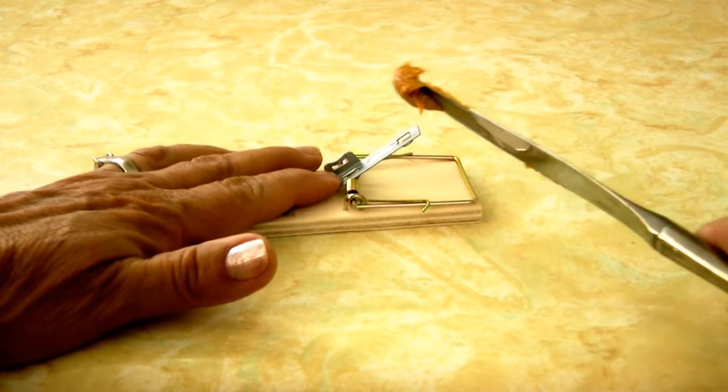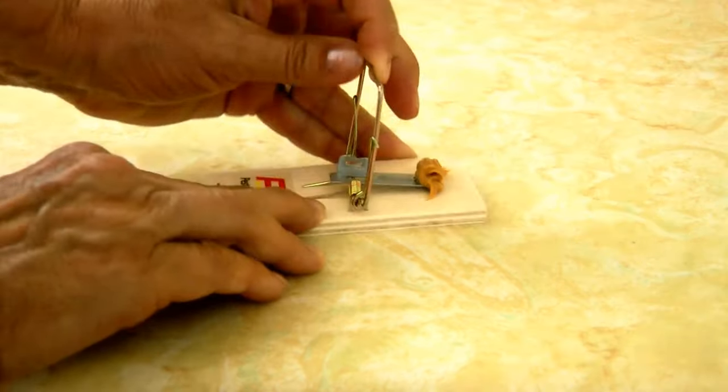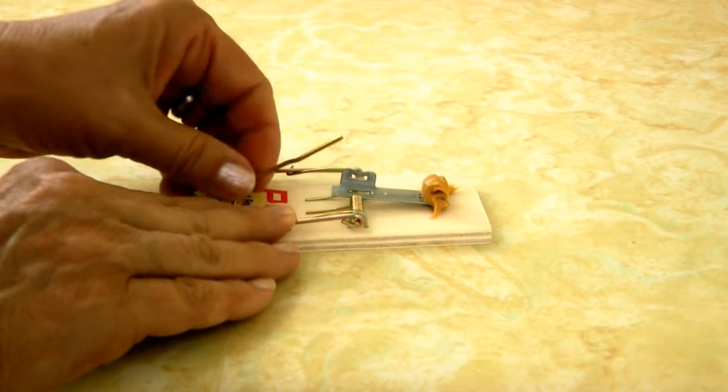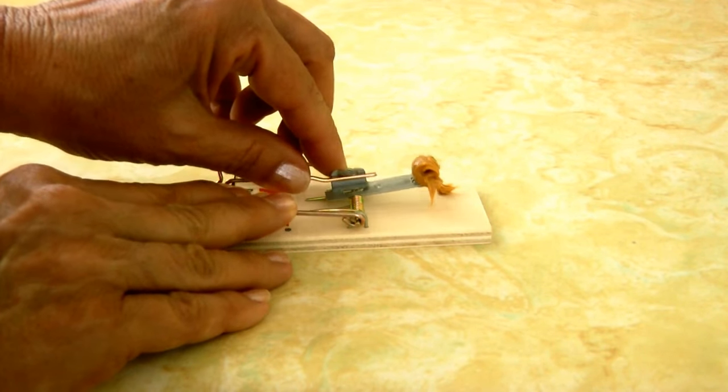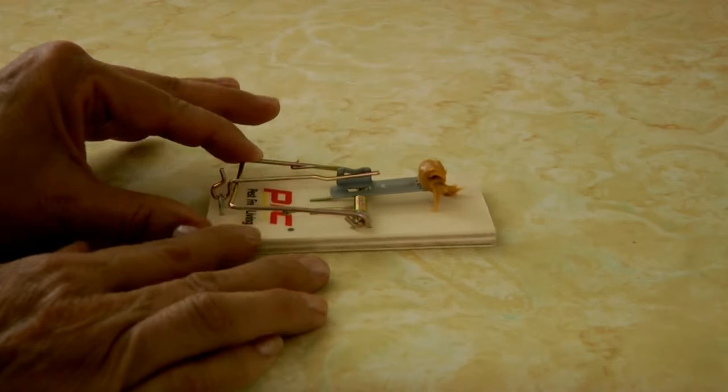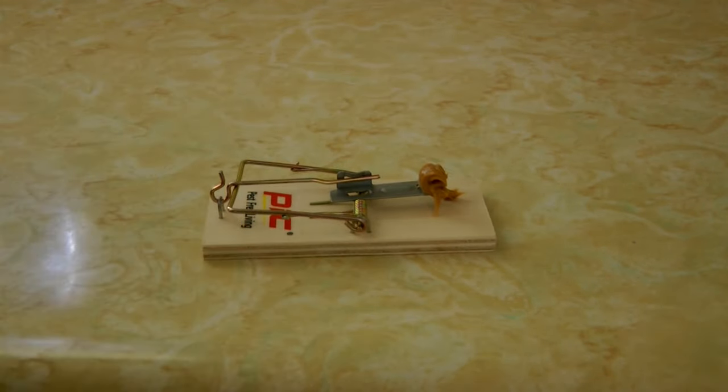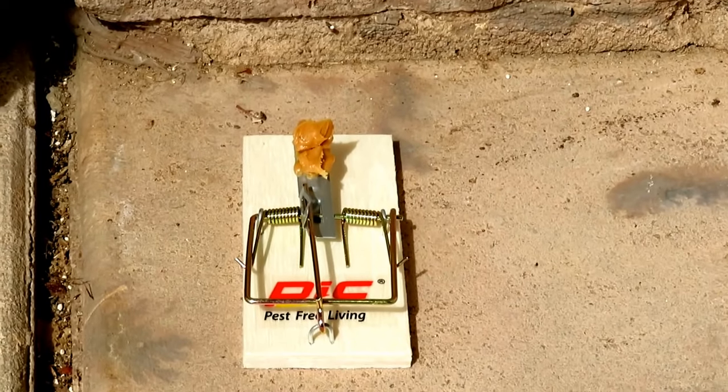Add the bait, pull back on the spring and set it with the pin. When a critter touches the mechanism, it springs. Now wherever you have seen any little critters, that's where you want to set your trap. Set it perpendicular to any wall.